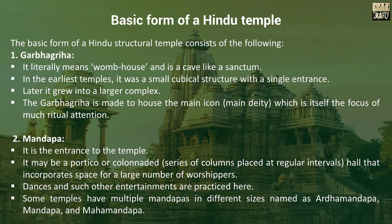The basic form of a Hindu structural temple consists of the following. First, Garbhagriha. It literally means womb house and is a cave-like sanctum. In the earliest temples, it was a small cubical structure with a single entrance. Later, it grew into a larger complex. The Garbhagriha is made to house the main icon, the main deity, which is itself the focus of much ritual attention.